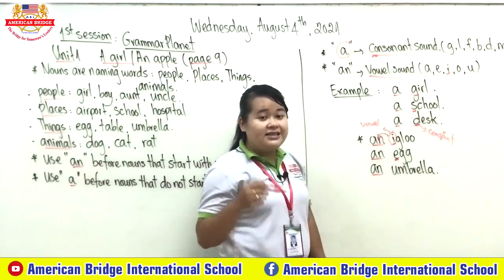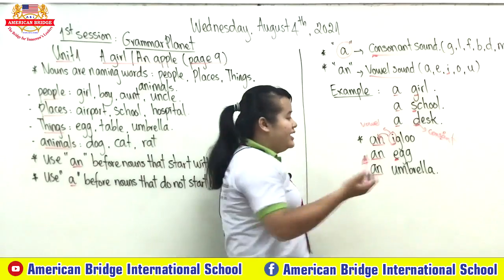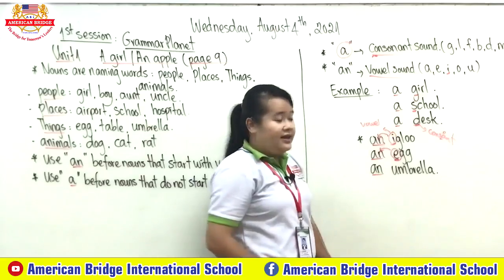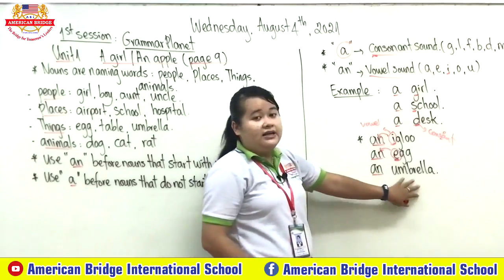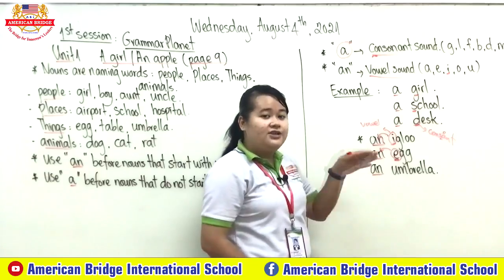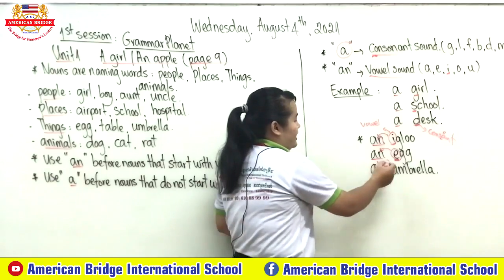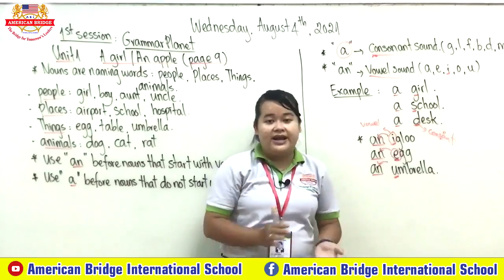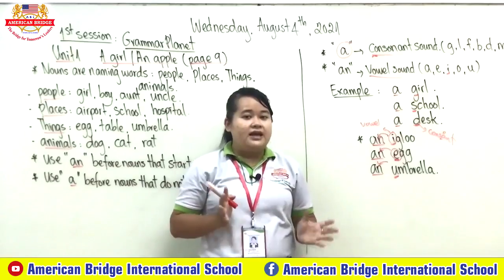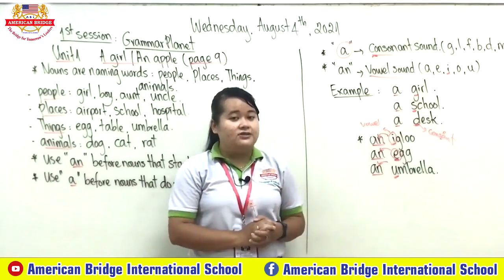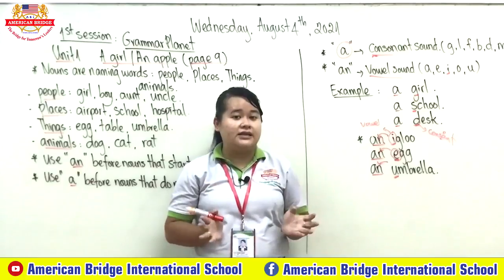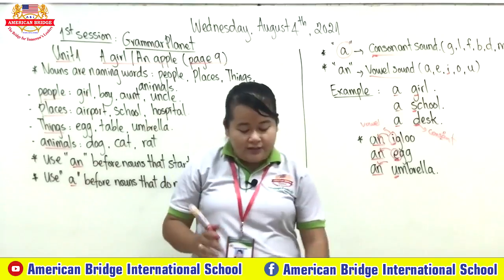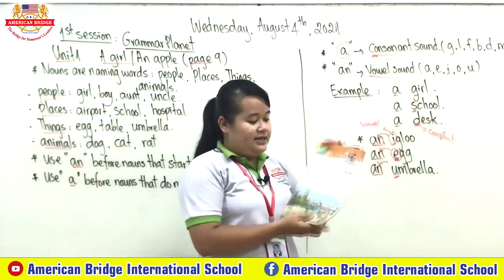'Egg' starts with the letter 'e' — is 'e' a consonant or vowel? It is a vowel, so we use 'an egg'. 'Umbrella' — do we use 'a' or 'an'? We use 'an umbrella' because the letter 'u' is a vowel sound. I hope you understand how to use 'a' with consonants and 'an' with vowels for nouns. Now let's move on to page nine.